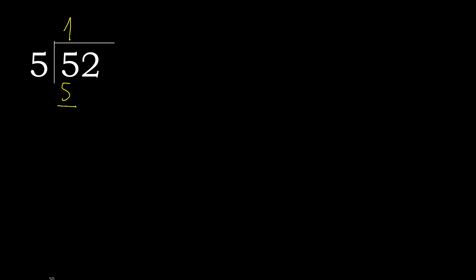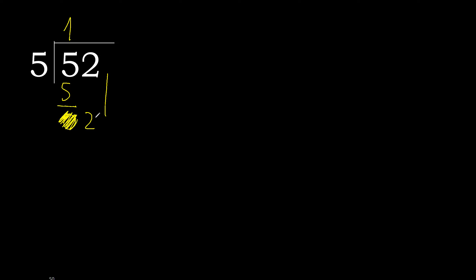5 minus 5 is 0. Eliminate 0 on this side. 2 is less, therefore next. There is no number, therefore complete — always complete with 0. 2 numbers, therefore 0 point.